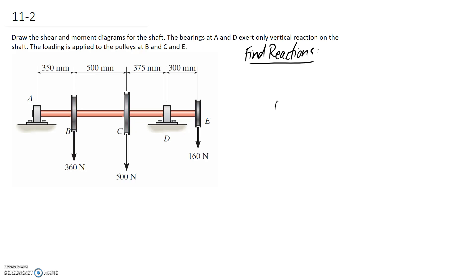Let me redraw my free body diagram with the reactions. We've still got these 360, 500, and 160 Newton forces going downwards, and at each of the bearings we need a vertical force. I'm going to guess they're both going up to counteract all these downward forces.